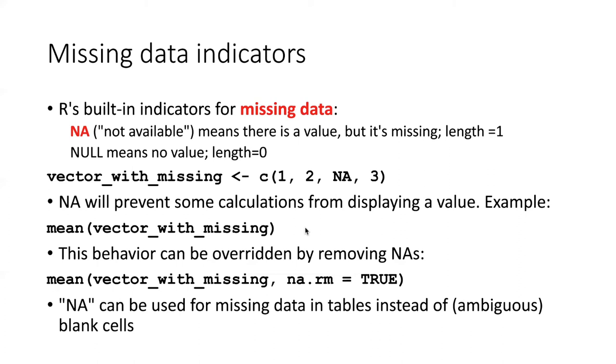If we don't want the presence of NAs to stop us from performing a certain calculation, we can override this behavior by putting in an argument called na.rm equals TRUE, which means remove all of the NAs prior to trying to carry out this calculation.